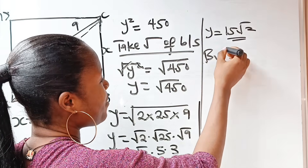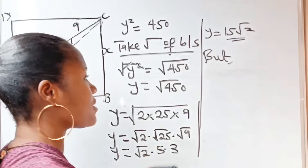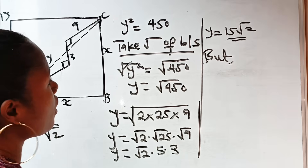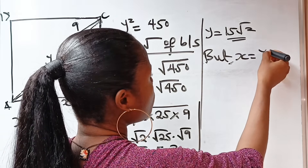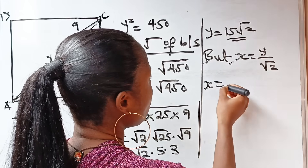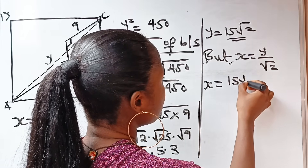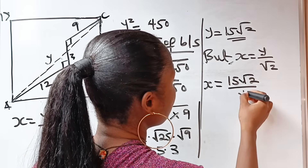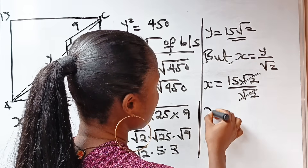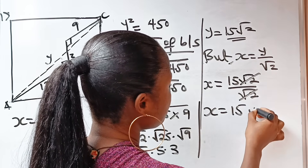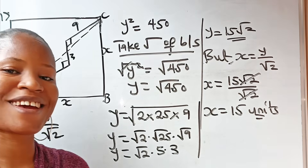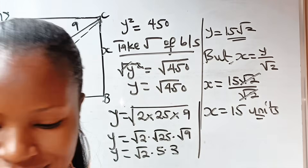Now recall that x = y/√2. Substituting: x = 15√2 / √2. The √2 cancels, giving us x = 15 units. Thank you so much for watching — see you in the next video!